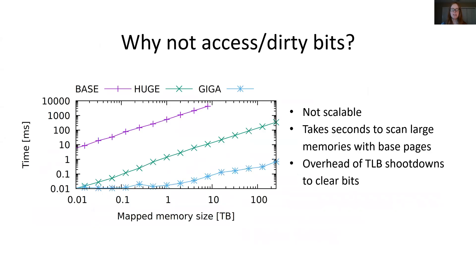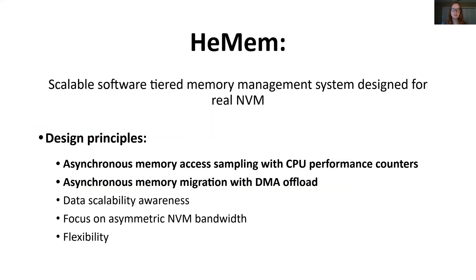So what's wrong with scanning page tables for access and dirty bits? Page table scans to determine which parts of applications are being accessed do not scale when you have terabytes of memory. To measure this, we evaluate how long it takes to scan page tables for various memory sizes when memory is mapped with base pages, huge pages, and gigabyte-sized pages. With base pages, scanning terabytes of memory takes on the order of full seconds. Page table scanning approaches also have overheads with maintaining the TLB, which must be shut down whenever access bits are cleared.